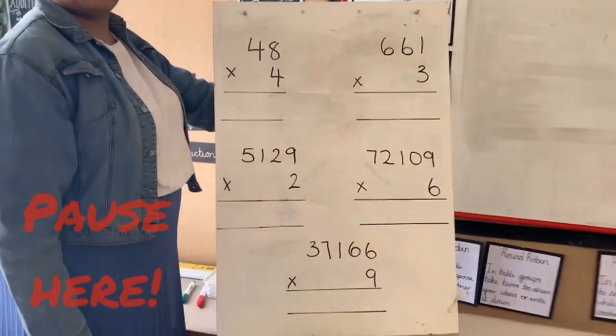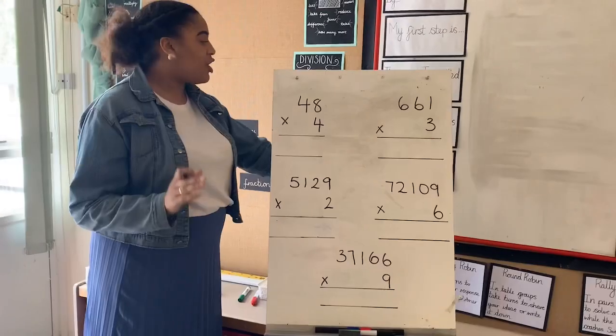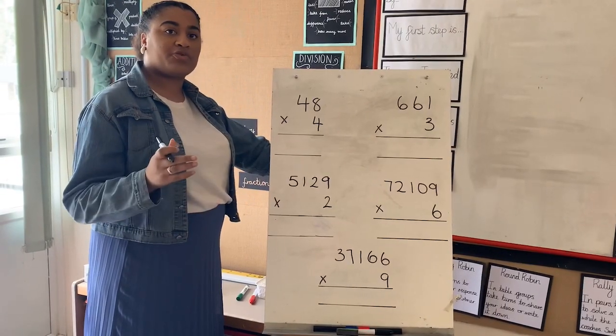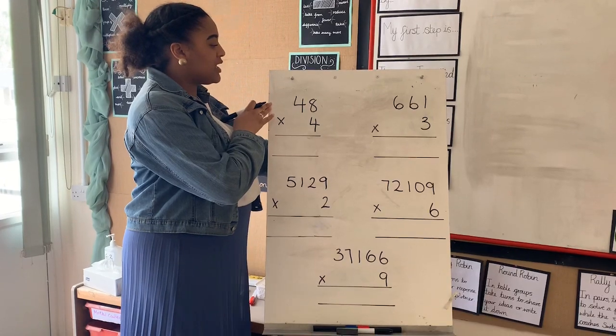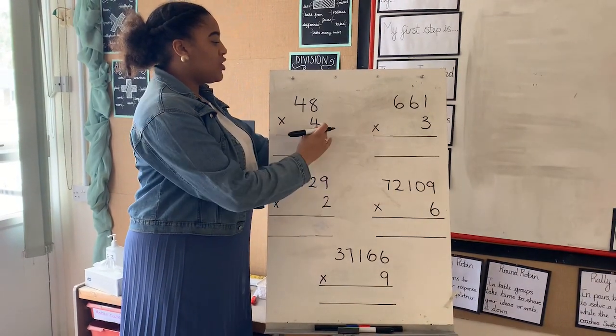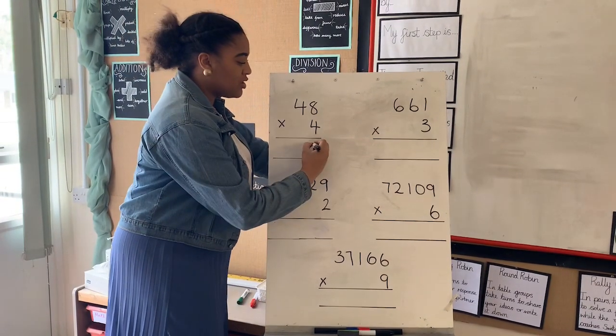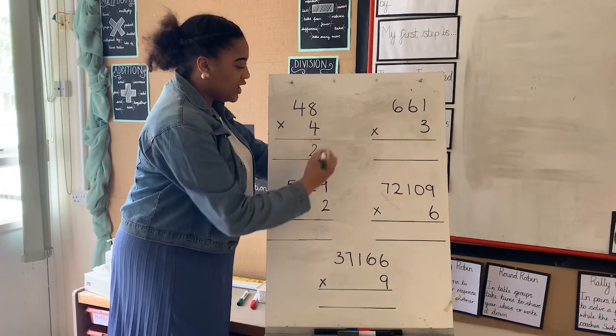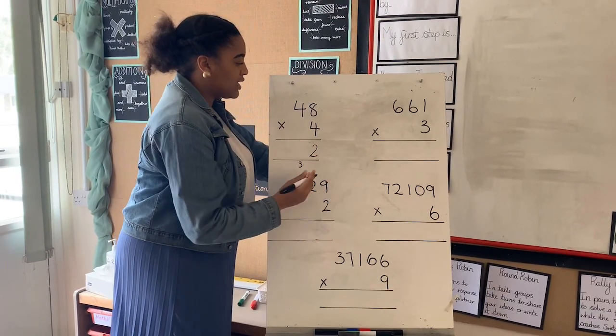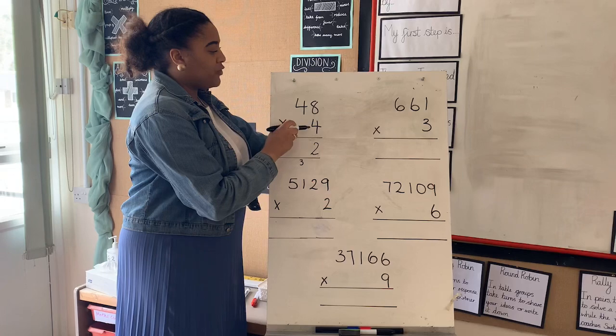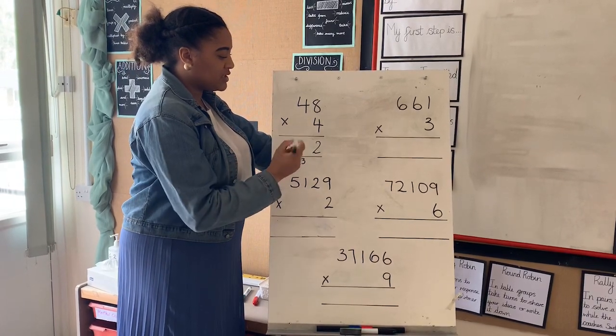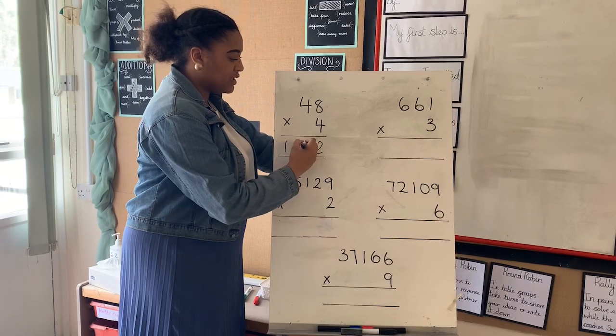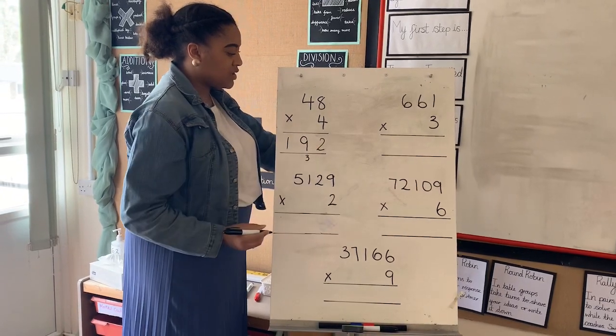Okay, hope you've all had a chance to have a go at those. Let's go through them together. Starting off with the first calculation, 48 times 4. Starting in our ones, 4 times 8 which is 32, put the 2 down there, exchange our 3 into the next column. 4 times 4 which is 16, adding what we've exchanged which is 3, which is 19. Make sure we're placing those into the right columns. The answer is 192.